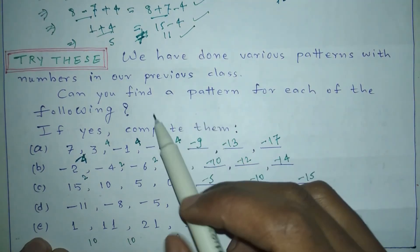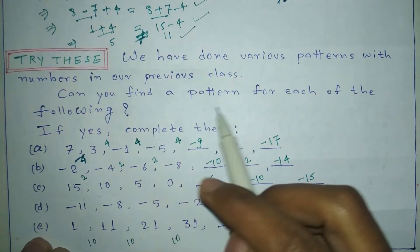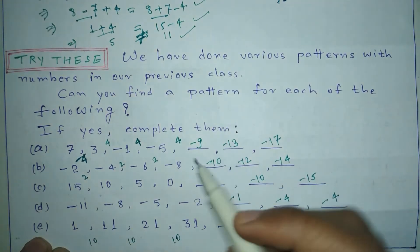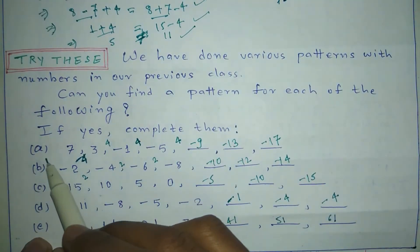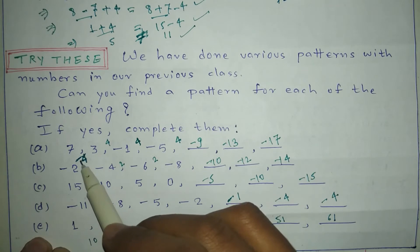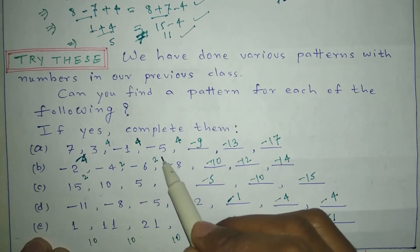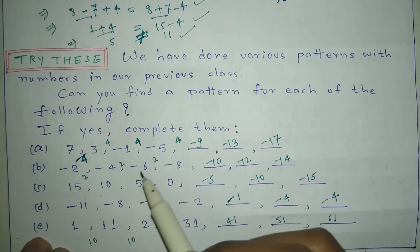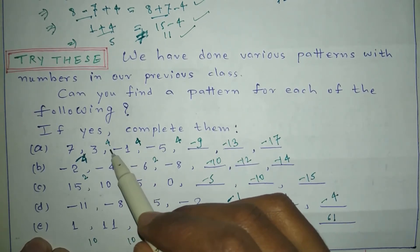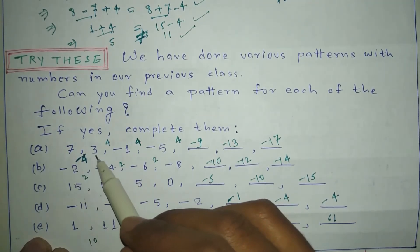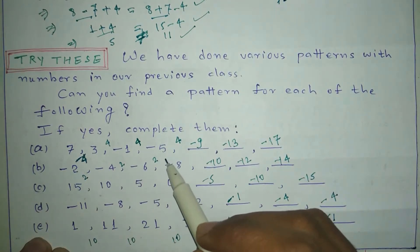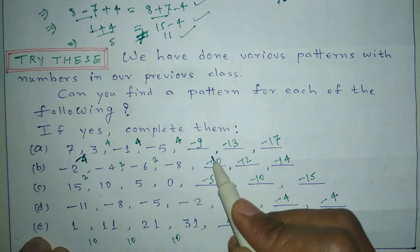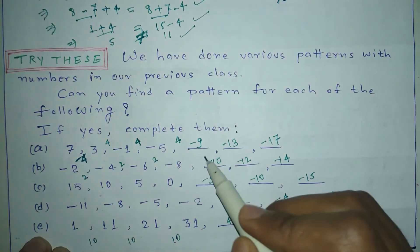Those were some concepts based on examples. Now let's try to solve some questions. The next question asks: can you find a pattern for each of the following? If yes, complete them. In question A, the series is 7, 3, minus 1, minus 5 — we can observe that 4 is being subtracted continuously.